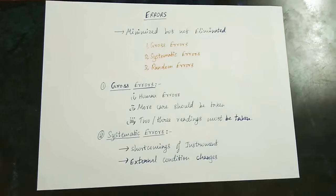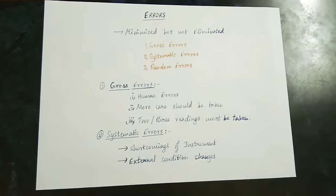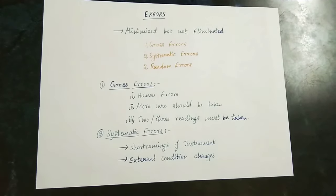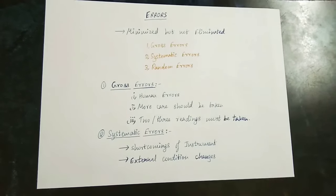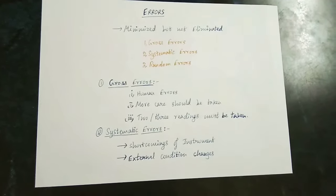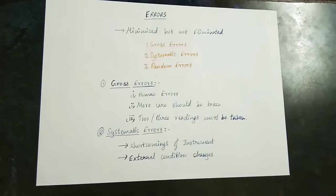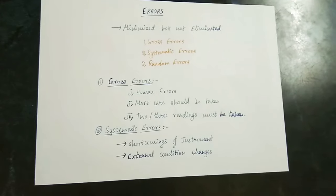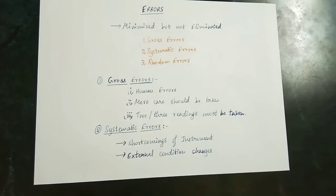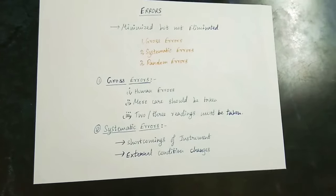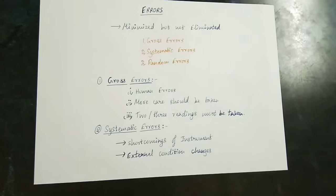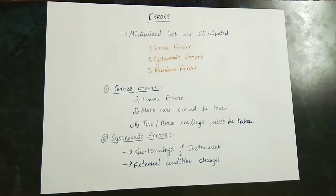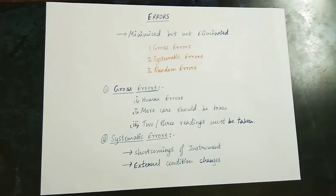Hi friends! In this video, let's talk about errors — that is, a classification of errors. We are going to talk about a classification of errors. Basically, there are 3 types of errors: Gross Error, Systematic Error, and Random Error.